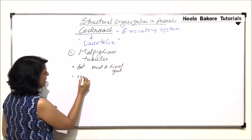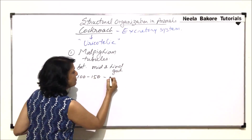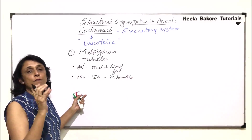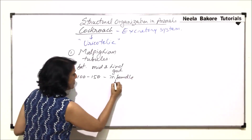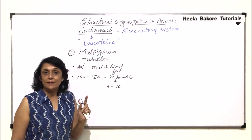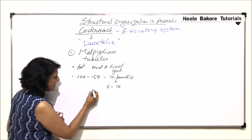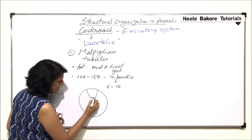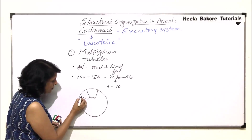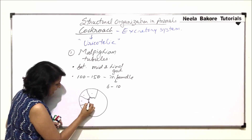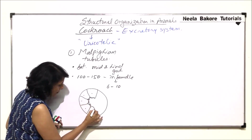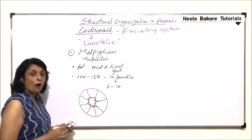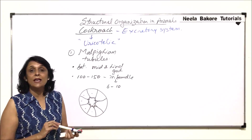Normally their number is 100 to 150, and they are found in bundles. Since there are 100 to 150 finger-like structures arranged in bundles, the number of bundles is less — normally 6 to 10. In cross-section, we see a layer of large cells. On the inner free surface, these cells have cilia, which help in elimination of waste material.